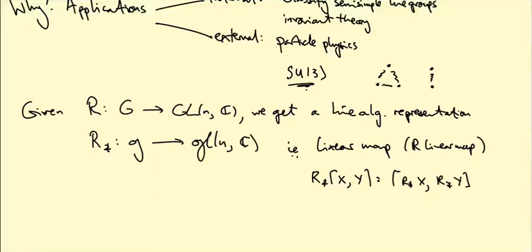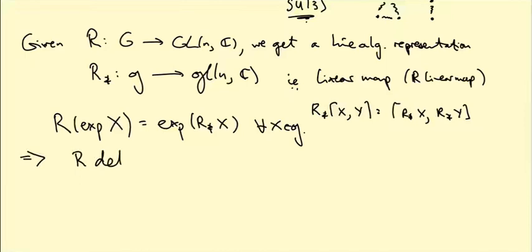At some point we will complexify the Lie algebra and turn it into a complex vector space and then look at complex linear maps, but for now just real linear maps. The key thing connecting these two is this equation: R(exp(x)) = exp(R*(x)) for all x in the Lie algebra. This tells us that R determines R* basically by differentiation. If I stick a parameter t next to x and differentiate with respect to t, I'm going to bring down a factor of R*(x). So that's basically how I figure out what the Lie algebra representation is. We'll see lots of examples of this.